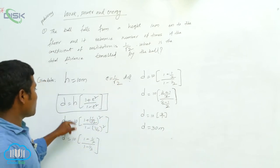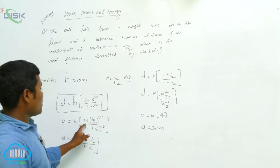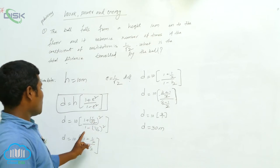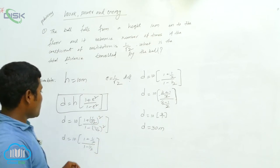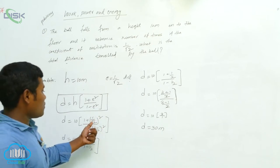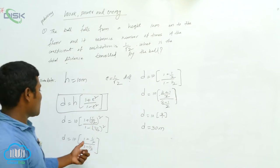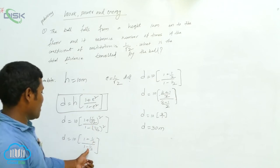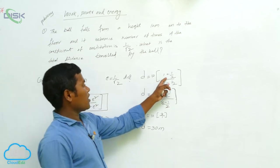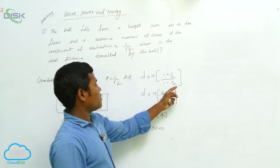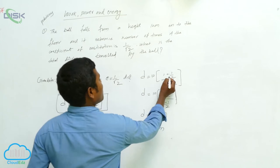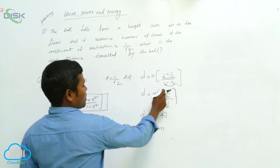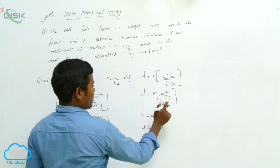Substituting the values: h = 10, and e = 1 by root 2. So 1 plus (1 by root 2) squared gives 1 plus 1 by 2. And 1 minus (1 by root 2) squared gives 1 minus 1 by 2. Taking the LCM, we get (2+1)/2 = 3/2 on top, and (2-1)/2 = 1/2 on the bottom.